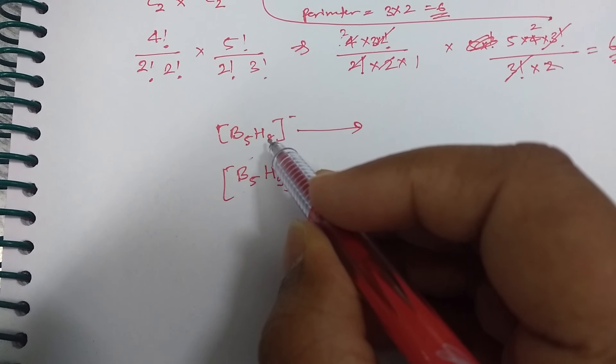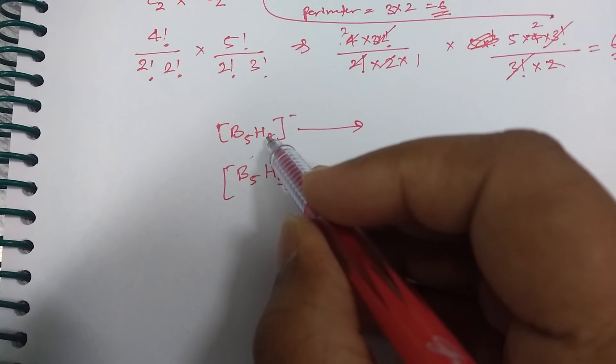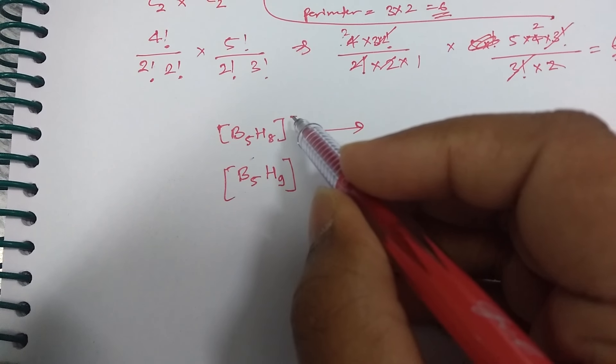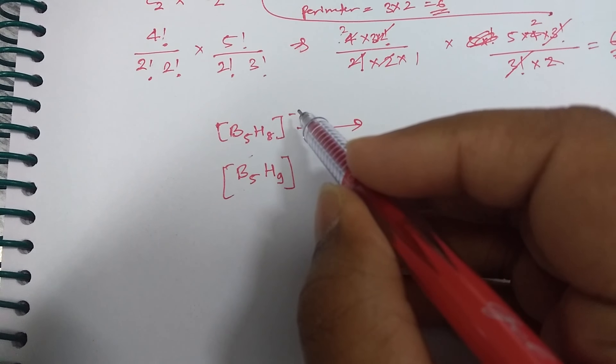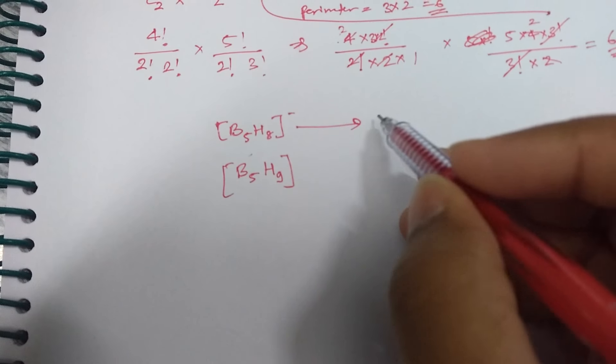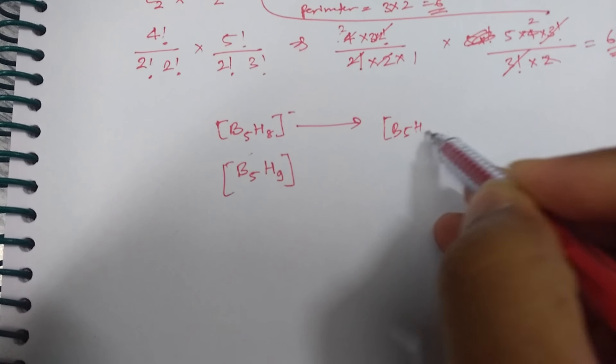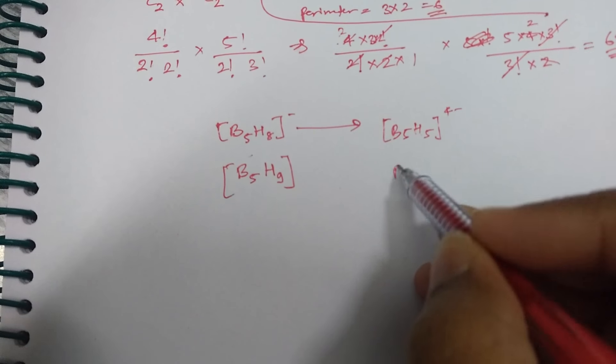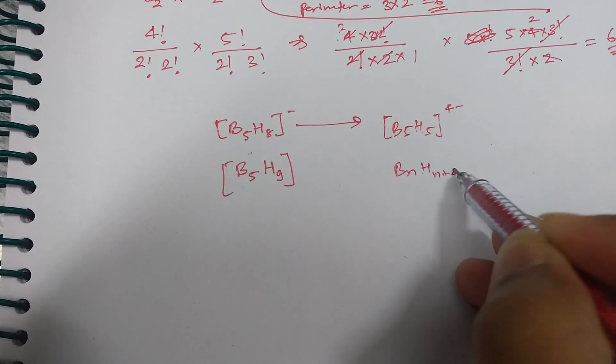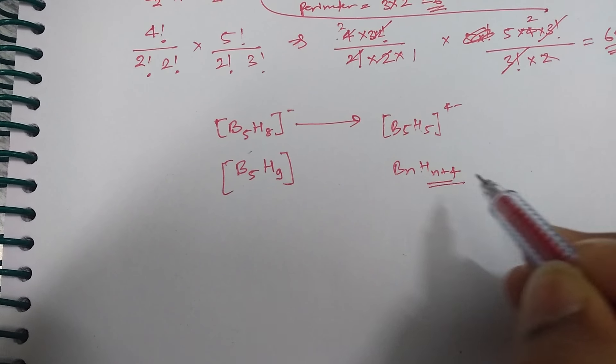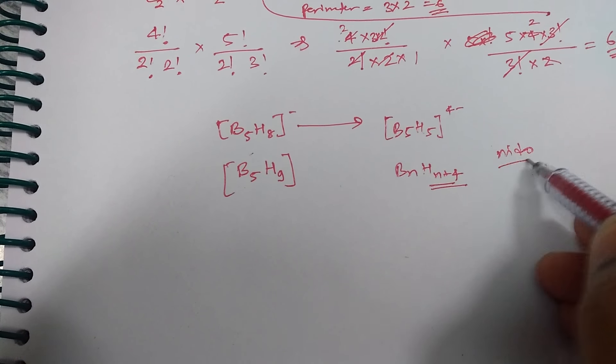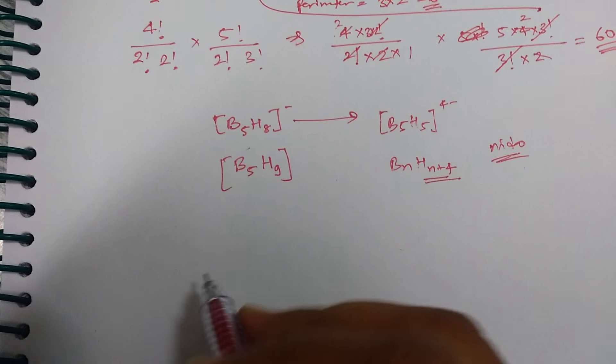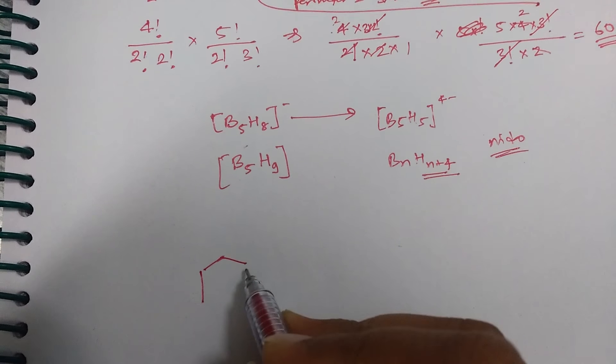Or you can also do like this, that you can remove three hydrogens. If you remove three hydrogens you have to increase the charges, so one charge is already here and three more charges, then it would have become B5H5 and 4 minus. In both the cases it is like BnHn+4. So for n+4 it is nido, so answer was nido over here.